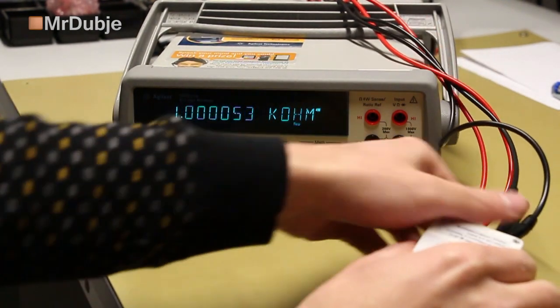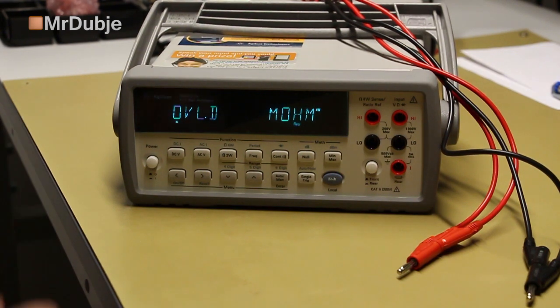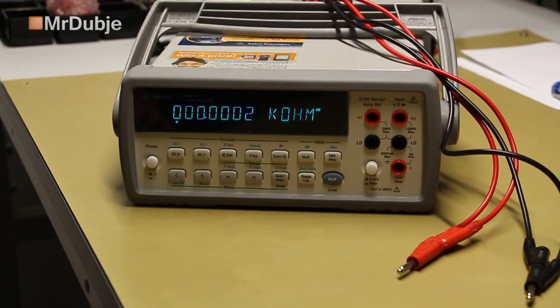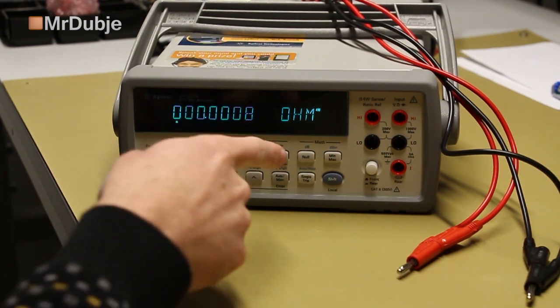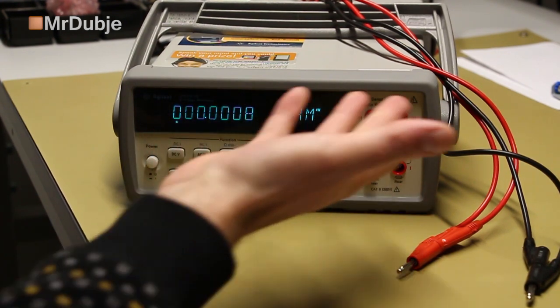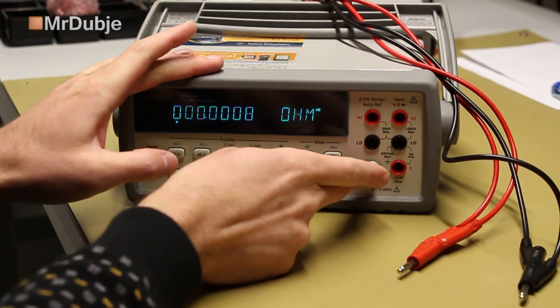And when I disconnect these, it should go overload. And it does, in rear. And on the front, it's now measuring 0 ohms, even though there is nothing connected.